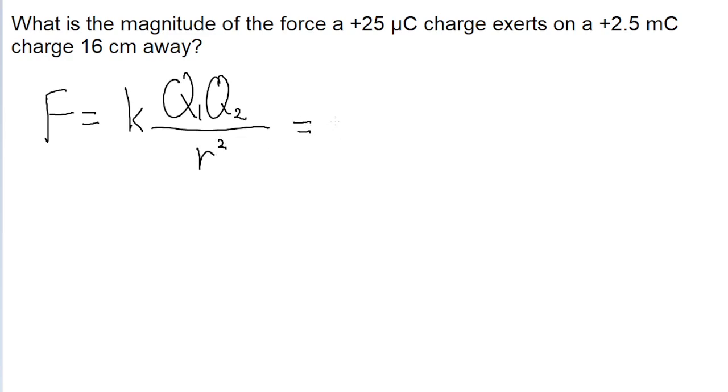So now we just got to put our values that were given by the problem into a calculator. So the Coulomb constant k is 8.99 times 10 to the power of 9 newton meter squared per Coulomb squared.